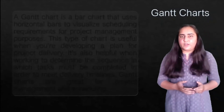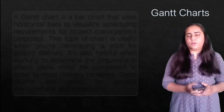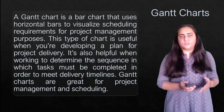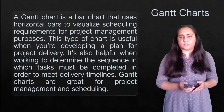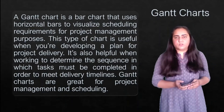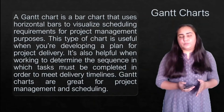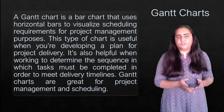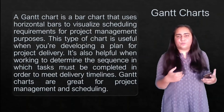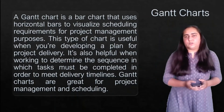Next we have Gantt charts. If you've studied operating systems and seen process scheduling, you might be familiar with Gantt charts. A Gantt chart is a bar chart that uses horizontal bars to visualize scheduling requirements for project management. It's useful when developing a project delivery plan and helpful for determining the sequence in which tasks must be completed to meet deadlines.